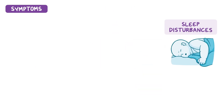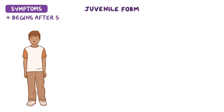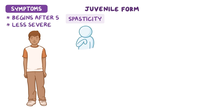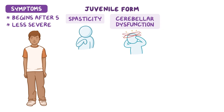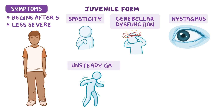There is also late-onset Canavan disease, known as the juvenile form, which begins after five years of age and is less severe. It is characterized by spasticity, or abnormal muscle stiffness, cerebellar dysfunction like vertigo or dizziness, nystagmus, or irregular eye movements, and unsteady gait.